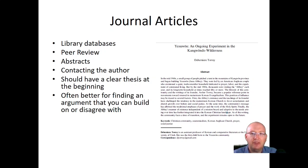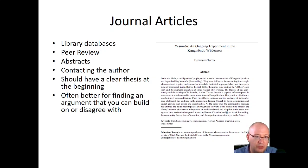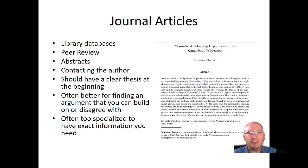Journal articles are usually better for finding an argument you can build on or disagree with rather than for factual information, due to their relative shortness compared to monographs. They typically assume you already know quite a bit about the subject, while monographs usually have more background information. It can be hard to find a journal article directly connected to your exact topic, and they often don't include much factual information — they're mostly arguments. But if you do find factual information in them, great.